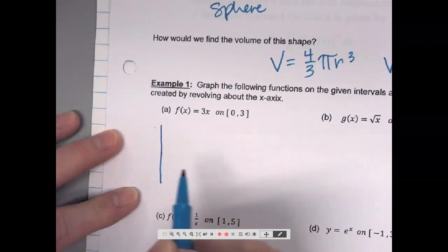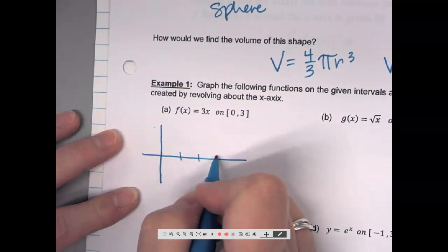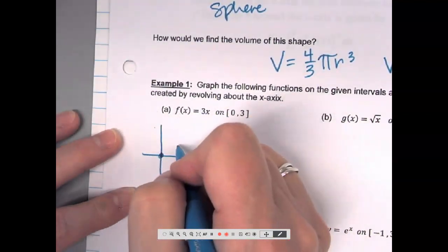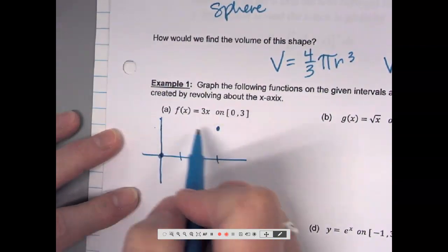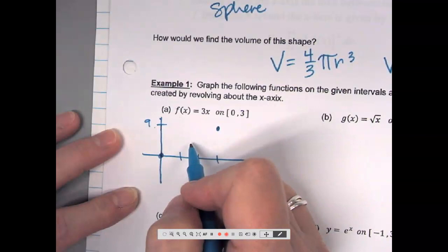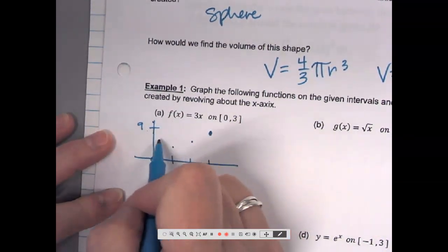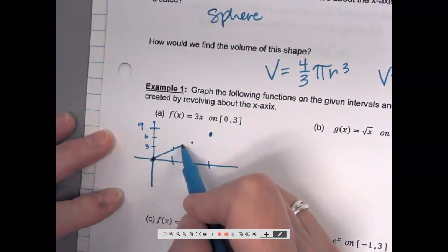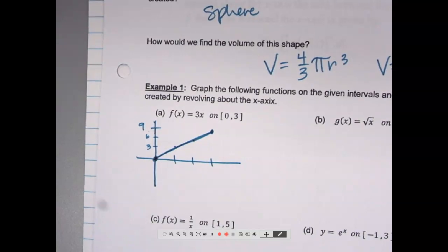So I have 0, 0. If I plug in a 3, then that's 9. And then this would be the line y equals 3x from x equals 0 to x equals 3. Is everybody okay how I got that?